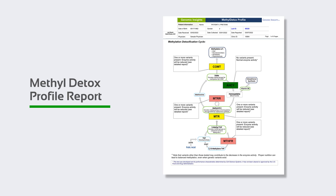Whether or not variants in the genes exist is indicated by color-coded results. Green for the wild type — what occurs most naturally — meaning the person is homozygous negative for that particular gene. Yellow for heterozygous positive: one parent passed on a variant and the other parent passed on the wild type. Red for homozygous positive: both parents passed on a variant. With variants in genes, it is assumed that enzyme activity is lessened. Heterozygous positive, indicated in yellow, means the enzyme is lessened somewhat. Homozygous positive, indicated in red, would be lessened more.